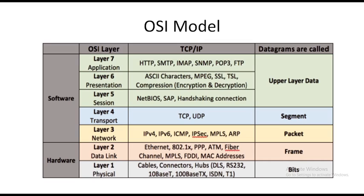First we are going to see the OSI model. OSI stands for Open System Interconnection. The OSI model was found in the year 1934 and it describes the standards for inter-computer connection. It is going to describe how the network connection should be there, and within this model different types of layers are there.